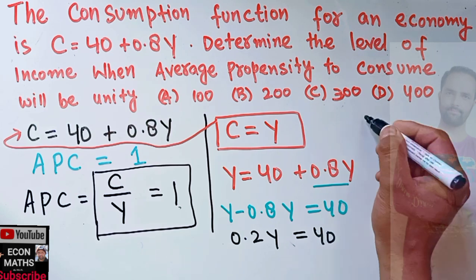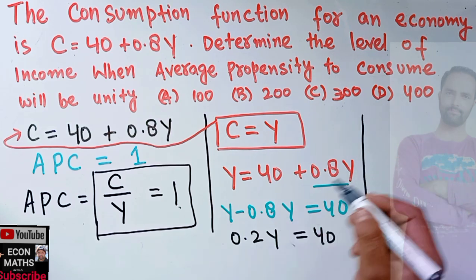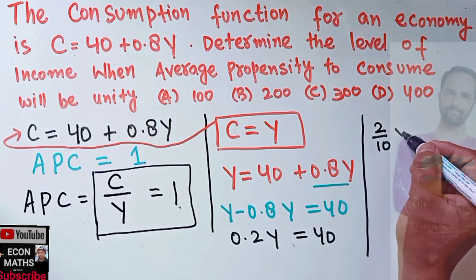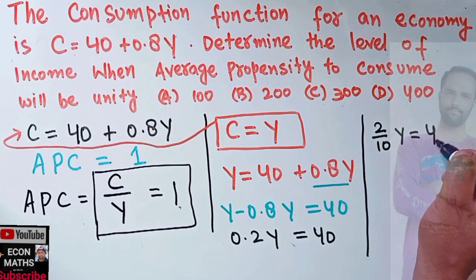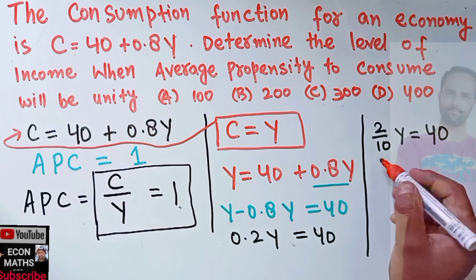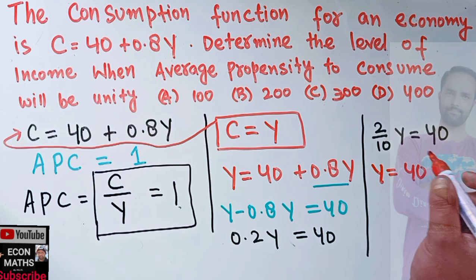0.2 can be written as 2/10, so (2/10)Y = 40. Or we can write it in this fashion: Y = 40, and when I transpose 2/10 it will get multiplied but reciprocated to the right-hand side, so it becomes 10/2.